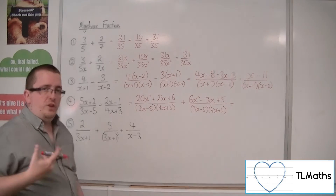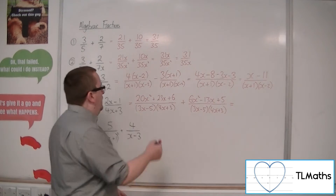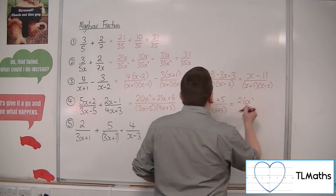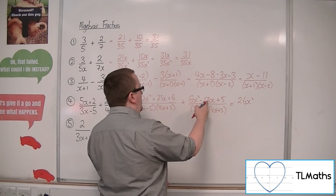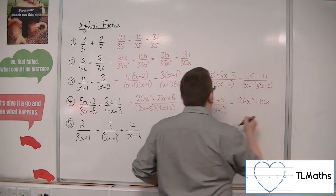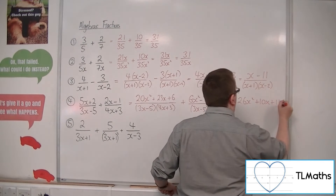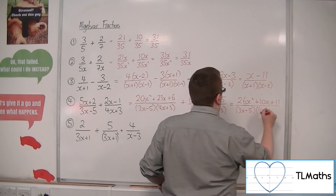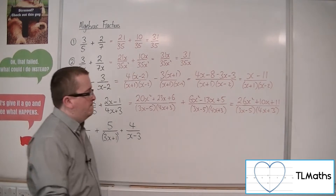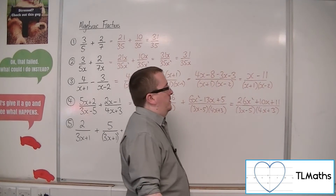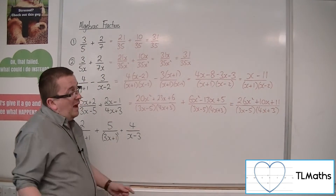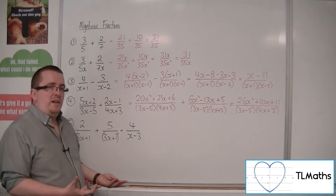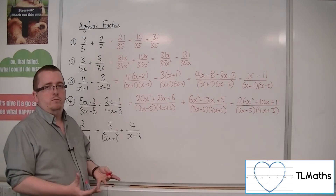Now that we've got a common denominator, we can combine the numerators. 20x squared plus 6x squared is 26x squared. We've got 23x take away 13x, so 10x. And 6 plus 5 is 11. All over (3x minus 5)(4x plus 3). That's as far as we can simplify — perhaps the numerator factorises, but unless we absolutely had to check, it's fine to leave it there.